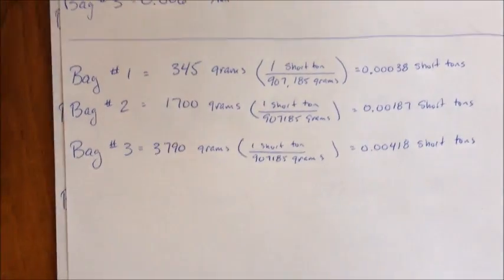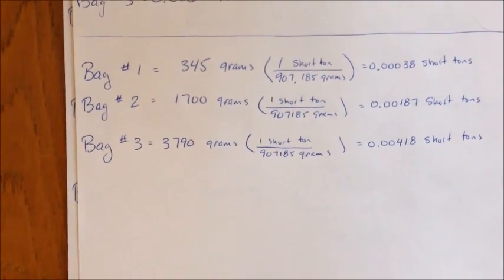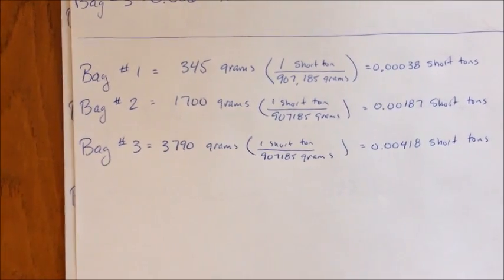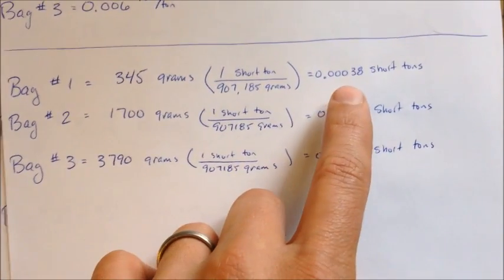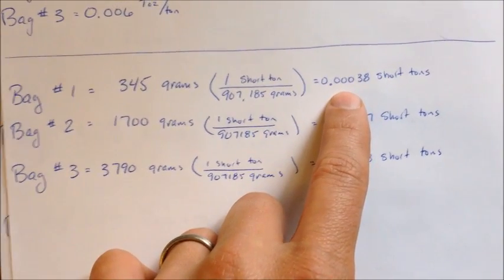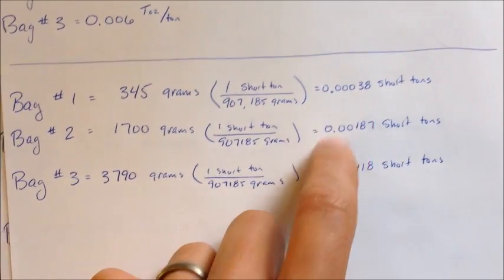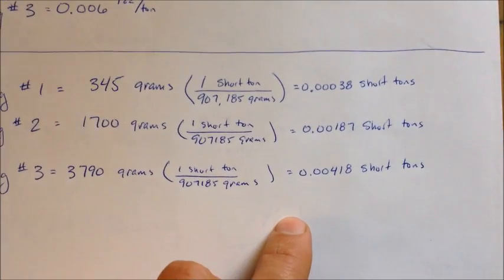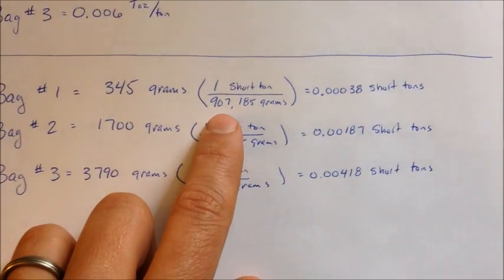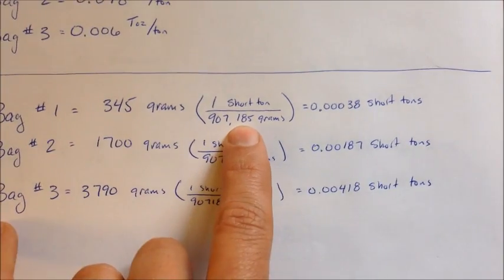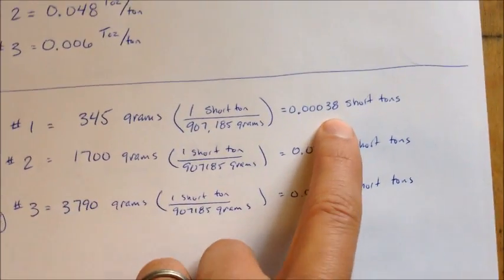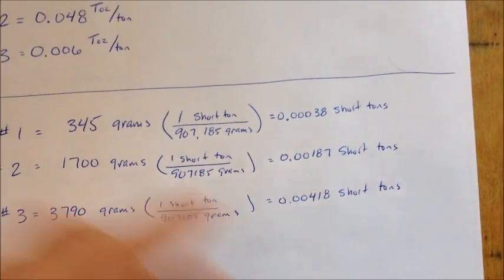So to find percent recovery, we take our bag weights, our sample weights, and convert them from grams into short tons. We're in the United States so we use short tons, which are 2,000 pounds per ton. And so there are 907,185 grams in a short ton. So the grams go away, you end up with short tons. These are all very small numbers.